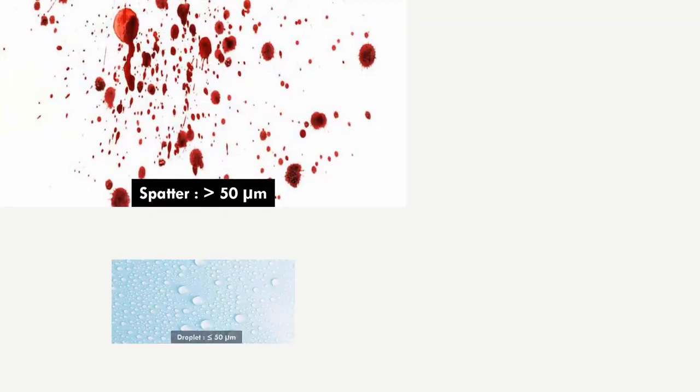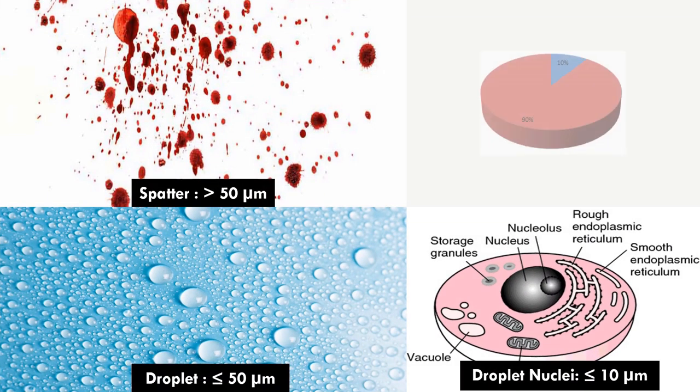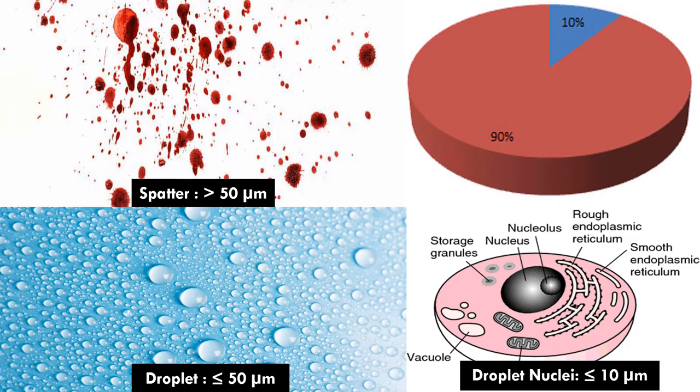Aerosols are differentiated based on particle size: spatter, droplets less than or equal to 50 micrometers, and droplet nuclei which are less than 10 micrometers. In dental settings, 90% of the aerosols produced are extremely small, less than 5 micrometers.